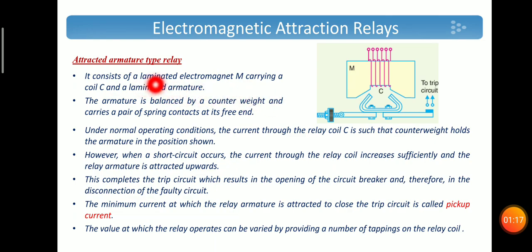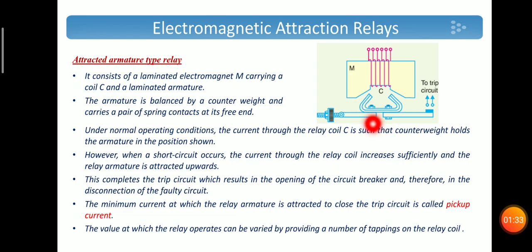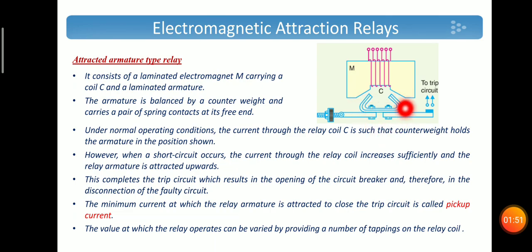In the attracted armature type, the relay consists of a laminated electromagnet carrying coil C, and the armature is balanced by a counter weight at the bottom. Here there is an electromagnet and the coil, and this is the armature balanced by the counter weight. Under normal condition, the current through coil C will not energize or attract the armature — it is balanced by the counter weight.